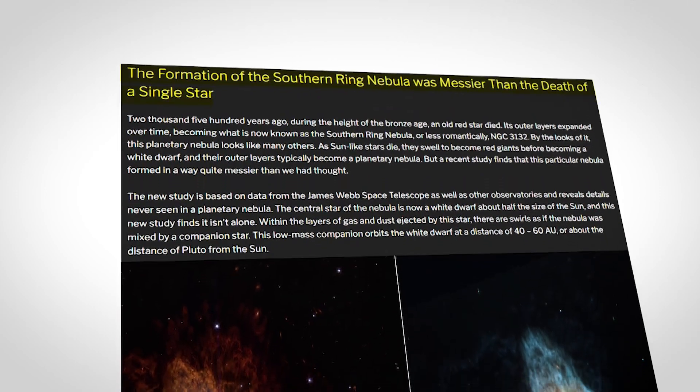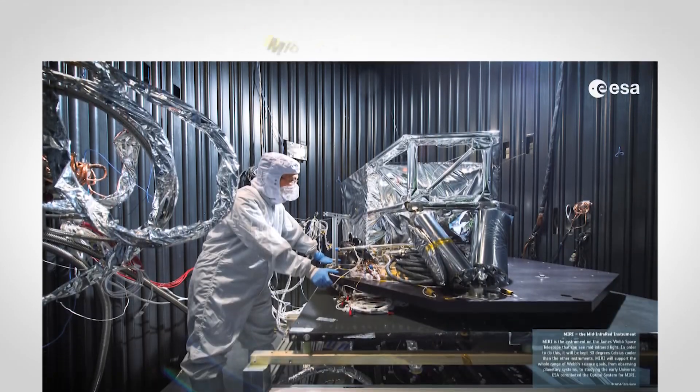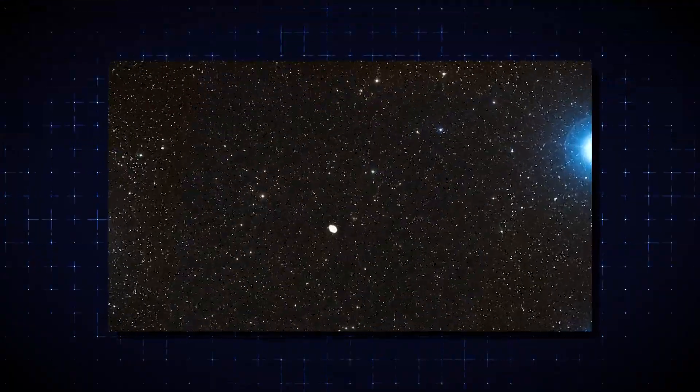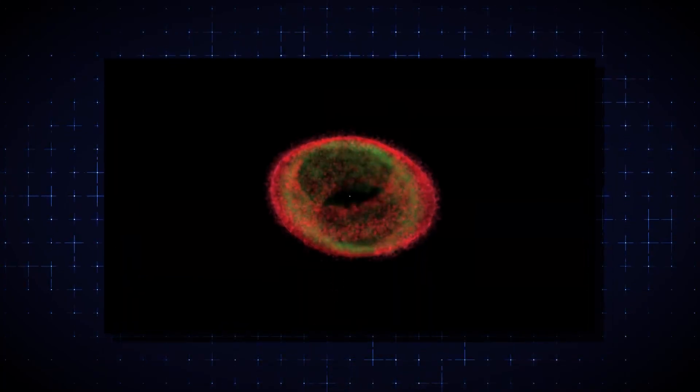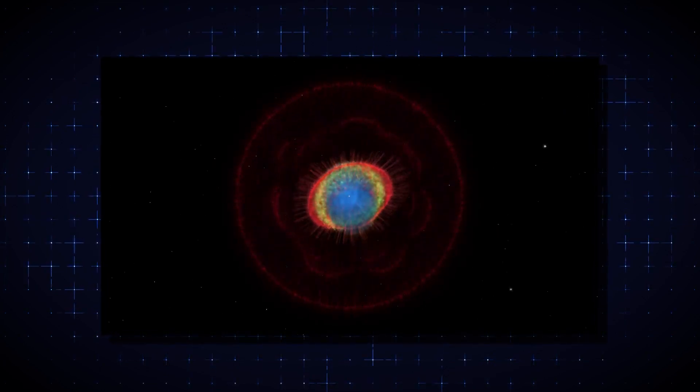However, with the help of the Near Infrared Camera and the Mid Infrared Instrument, researchers were able to identify that the white dwarf wasn't exactly invisible. In fact, it was glowing red and was surrounded by a haze of cool gas that no one had any idea where it had come from.